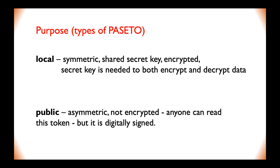Here's the purpose, or types of Passera. It has two kinds: local and public. Local tokens are always symmetrically encrypted with a shared secret key, which means no one can read the contents of a local Passera unless they have the correct secret key — the secret key is needed to both encrypt and decrypt the data. Public tokens are readable by anyone; a private key is used to create a Passera and a public key is needed to validate the token. And there is no 'none' option.